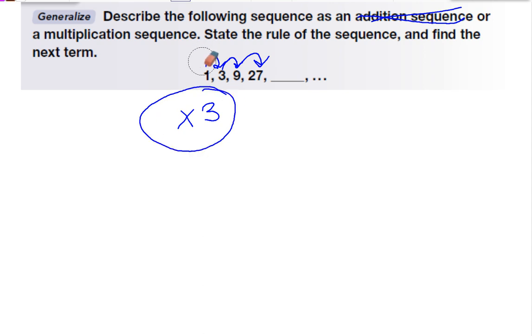Now I need to find the next term in the sequence. And I'll do that by doing 27 times 3. 3 times 7 is 21. Carry my 2. 3 times 2 is 6. Plus 2 is 8. So the next number in my sequence is 81.